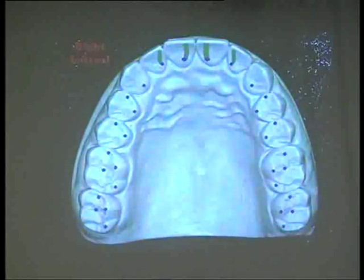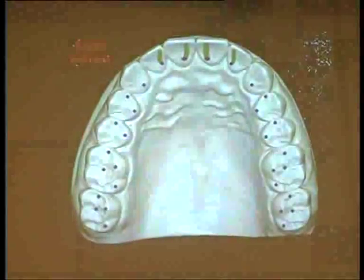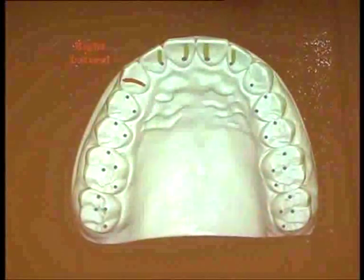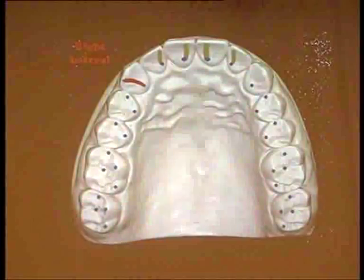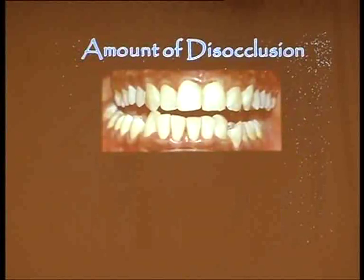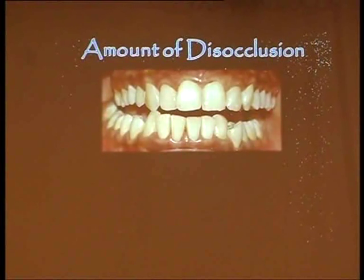Next is going into right lateral. When you go into right lateral — that is, your functional movement is towards the right — you have one tooth or more teeth that is guiding the entire occlusion. Appreciate this: this patient is going into right lateral. Can you see tooth separation on the working side as well as on the non-working side? Working side is right side, non-working side is left side.